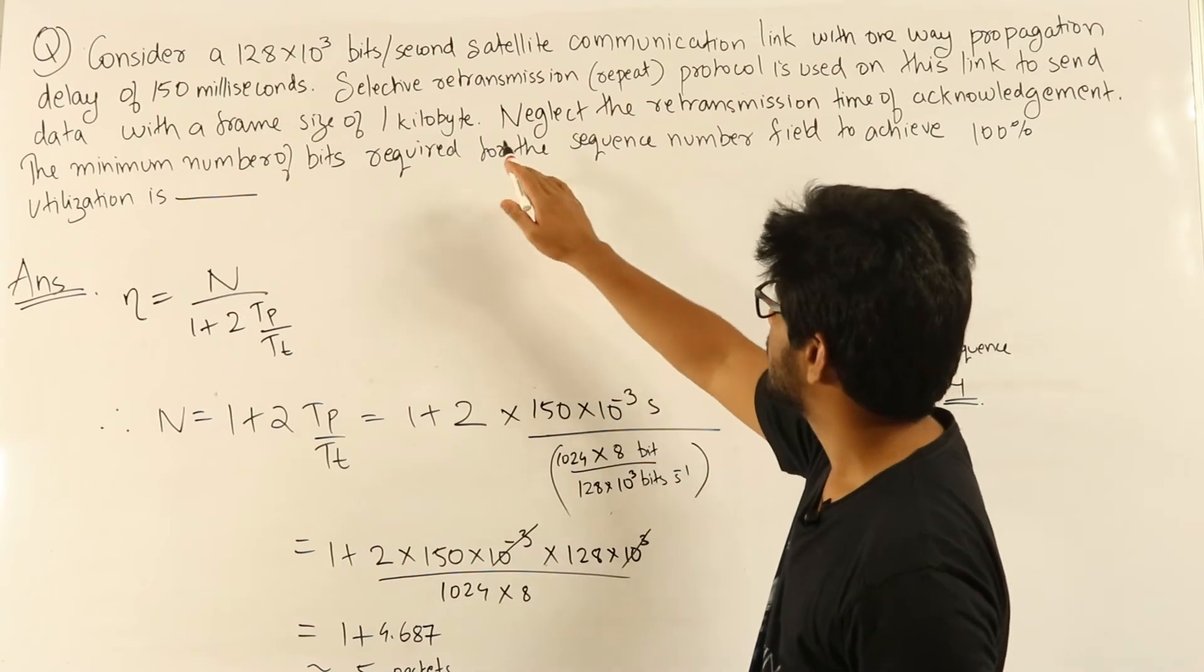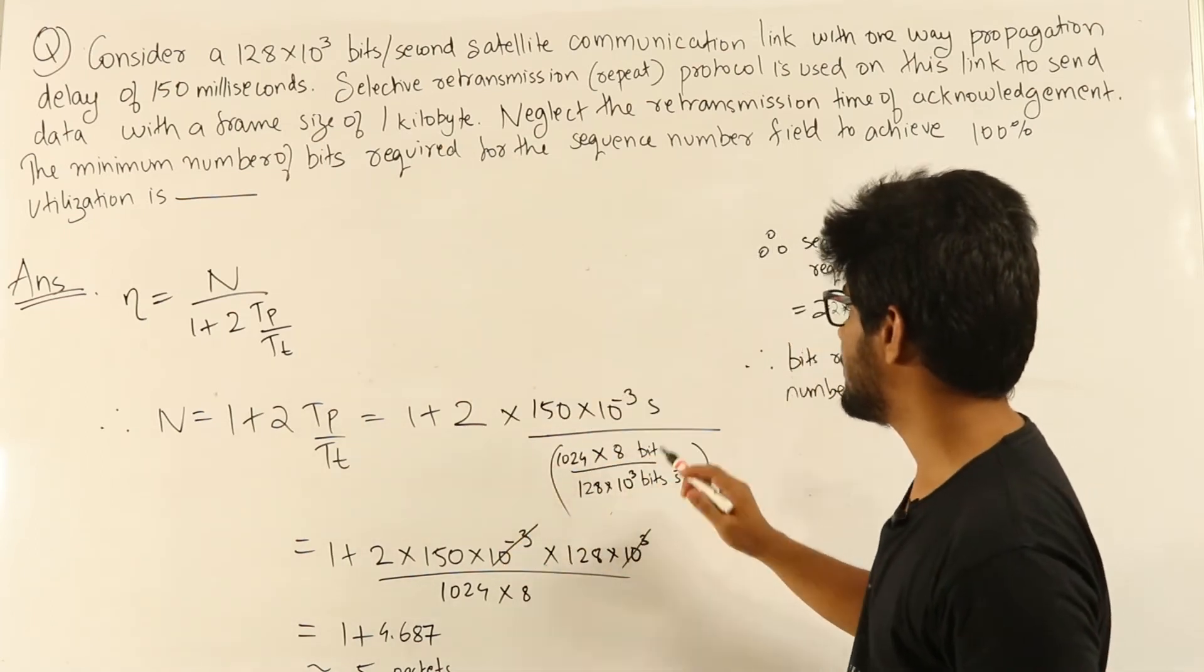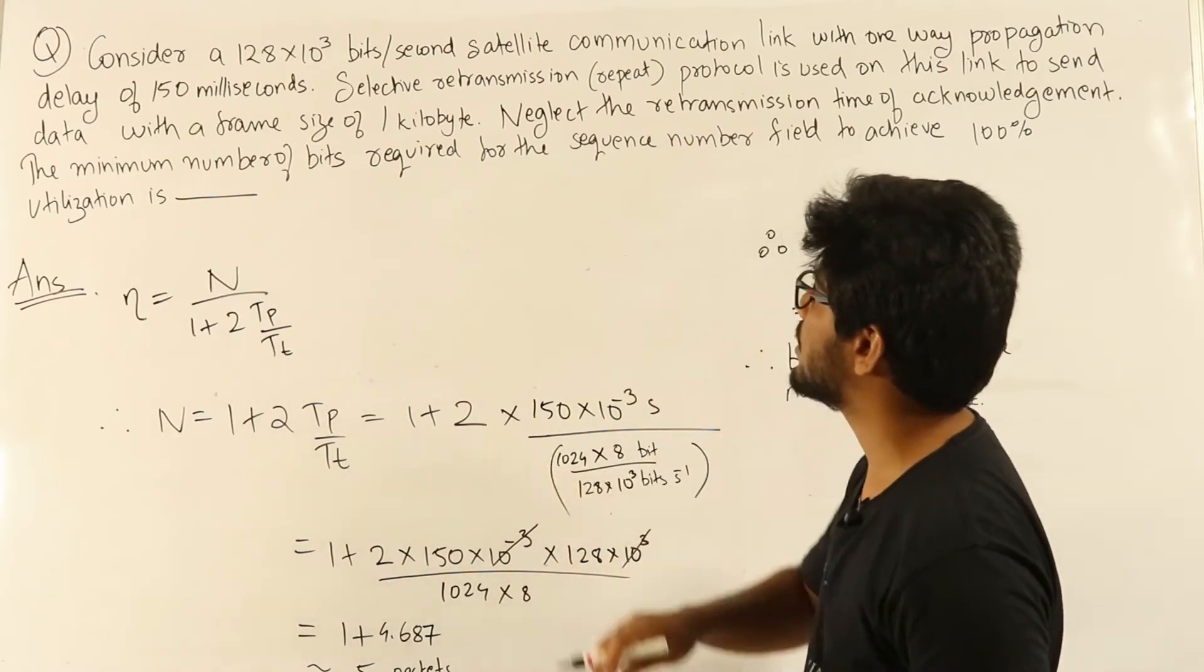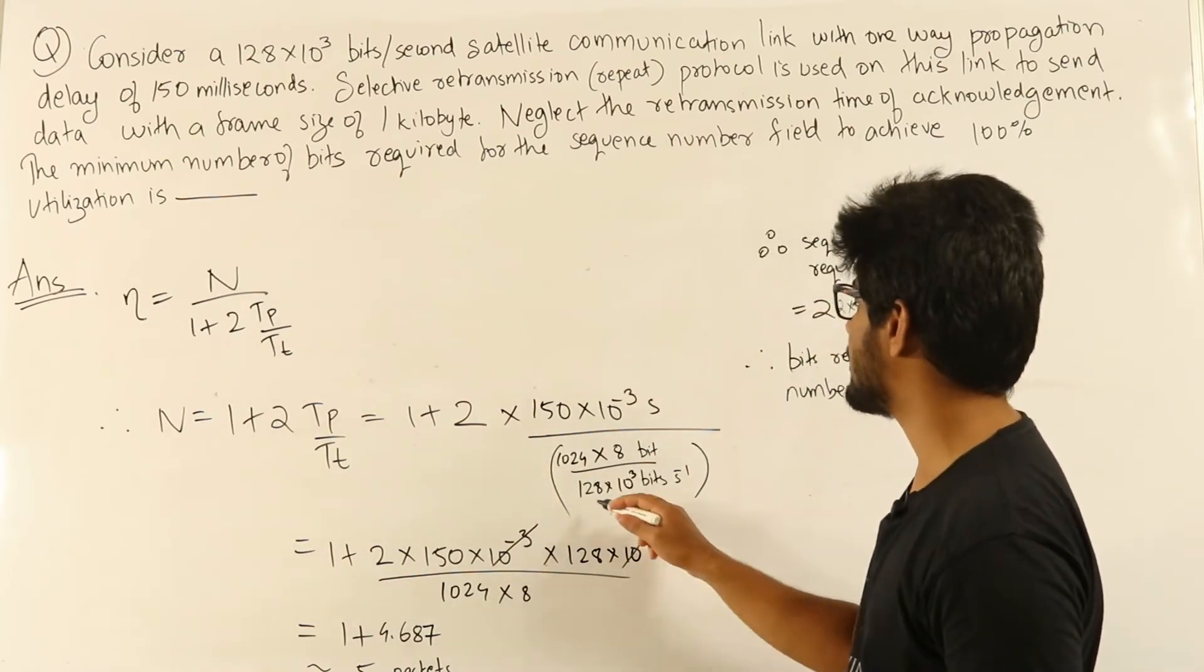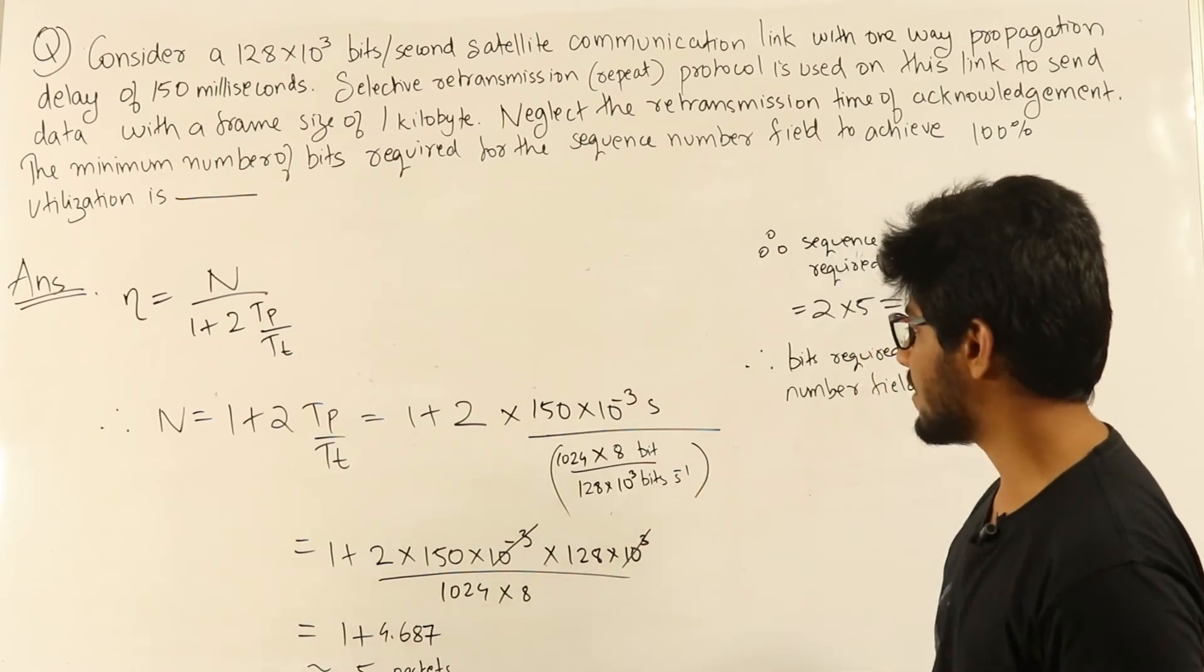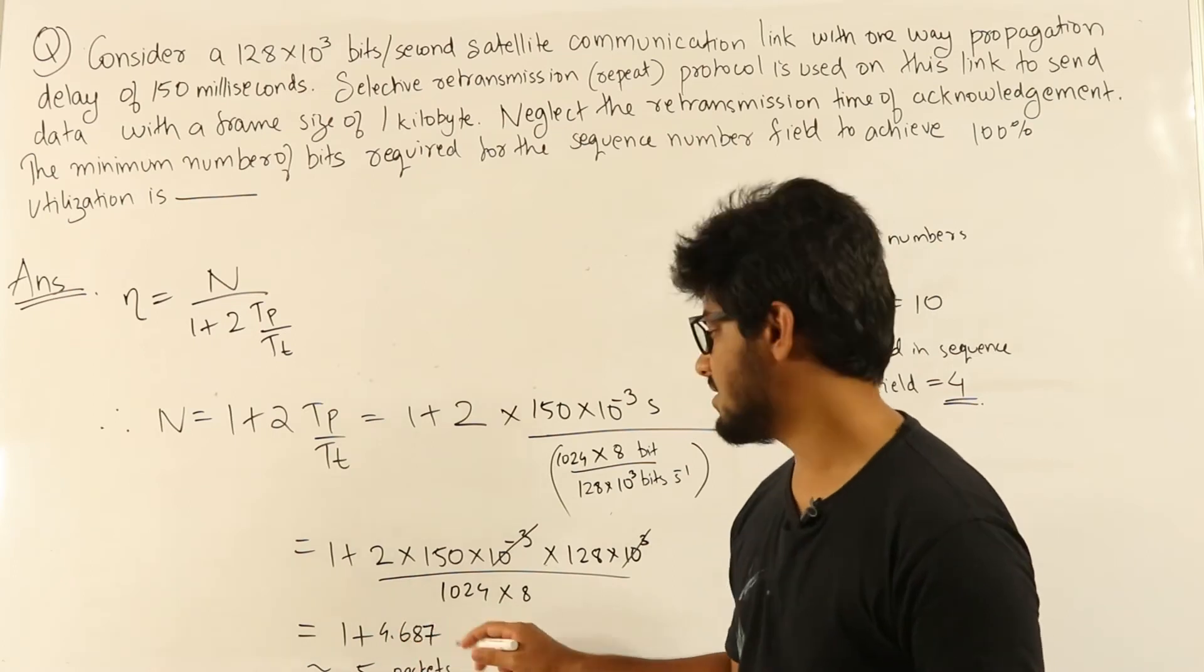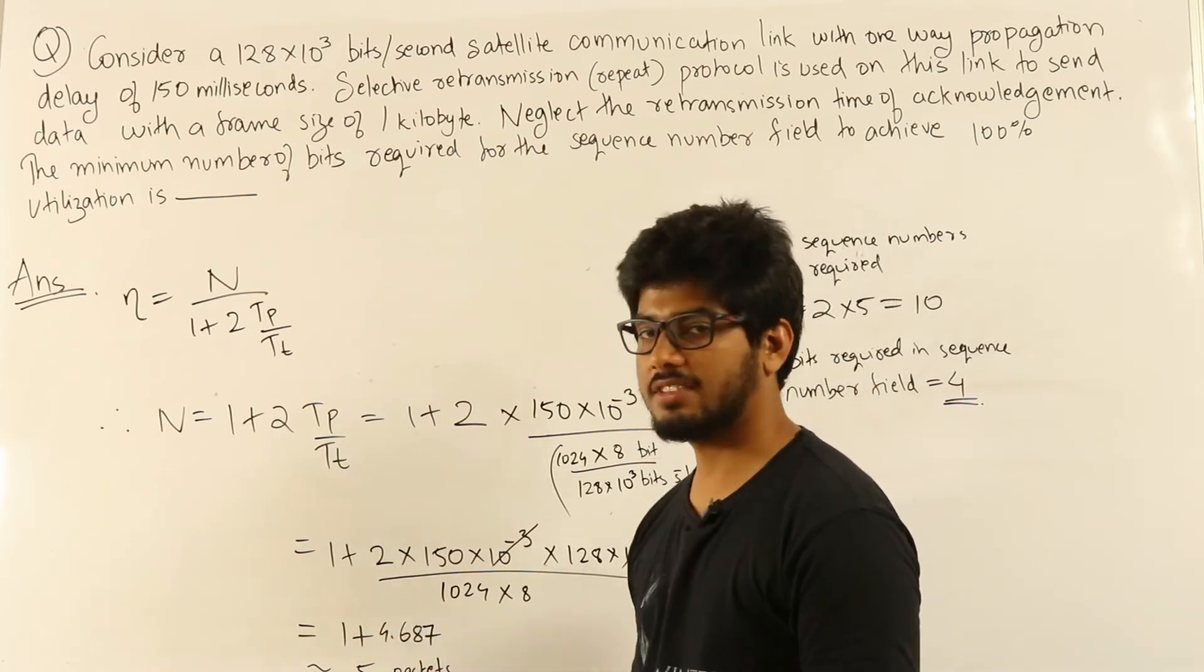Packet size is 1 kilobyte, that is 1024 × 8 bits, divided by bandwidth of 128 × 10³ bits per second. When you simplify, you get 1 + 4.687, which equals 5.687.